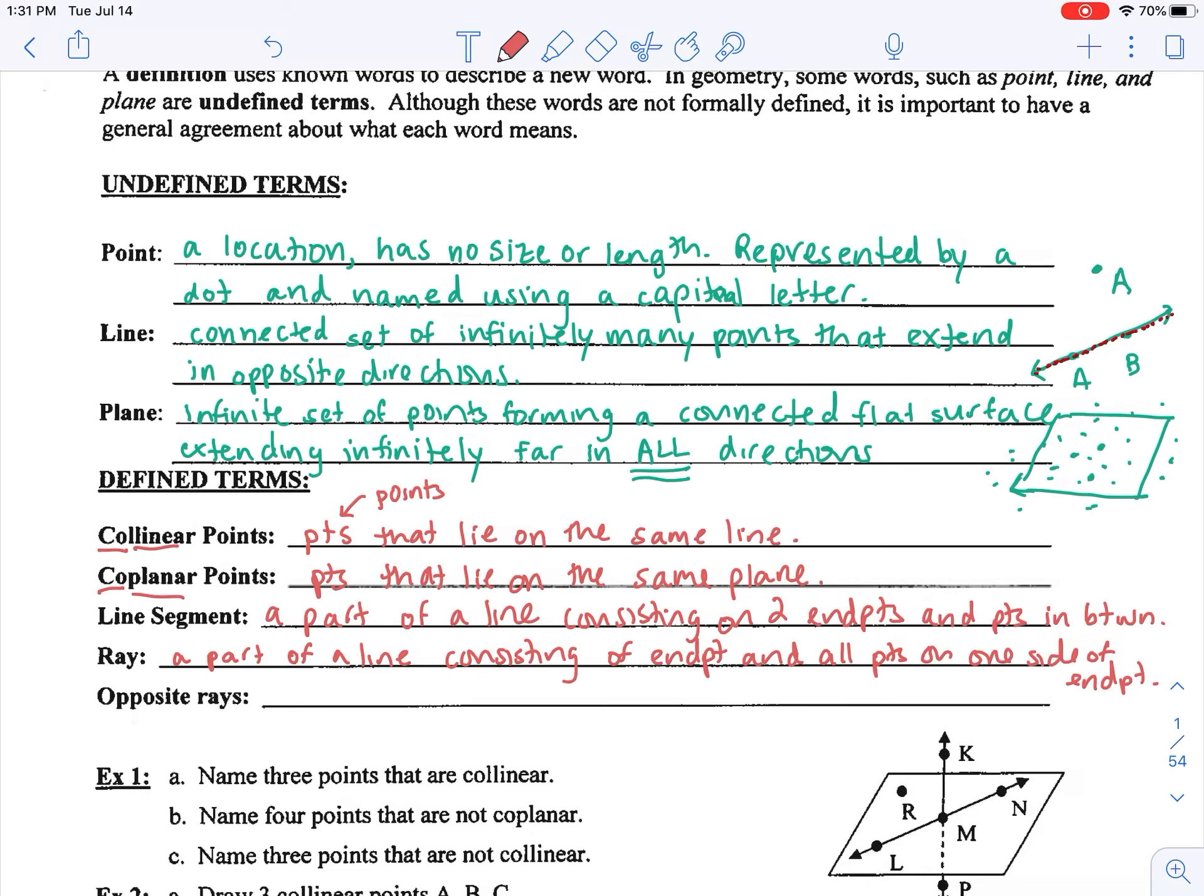Finally, we have opposite rays. I look at an opposite ray as essentially a line made up of two rays. Rays that have the same endpoint and lie on the same line, but extend in opposite directions.